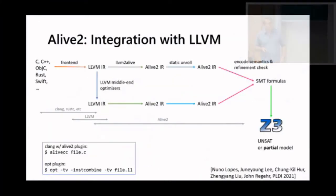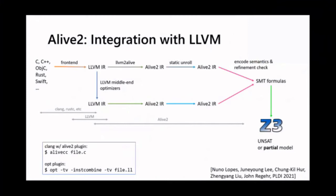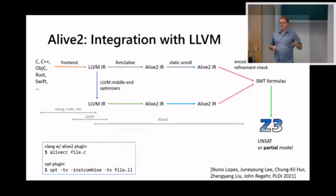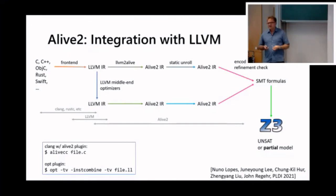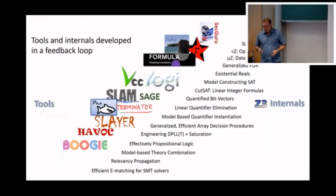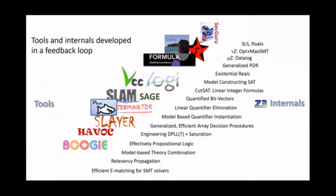Another application is translation validation. The Alive2 tool takes programs compiled by the LLVM tool chain, which comprises several transformation passes that do micro-optimizations. It takes two versions of code — before and after transformation — and checks they are equivalent. This is used to find compiler bugs. Over the years, there have been many research tools developed in my group that have driven internal development of Z3.